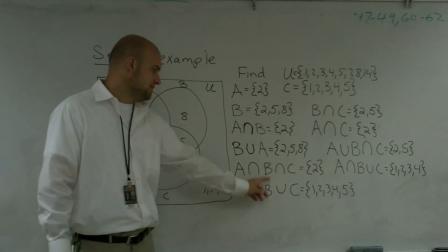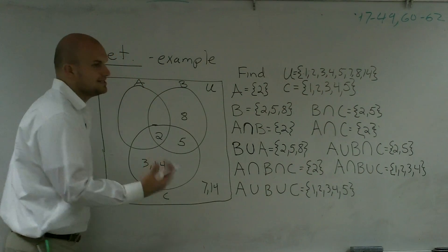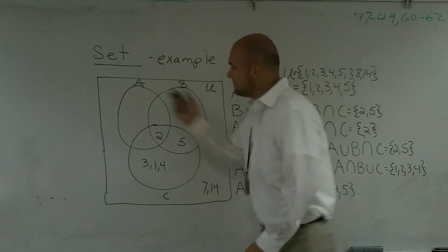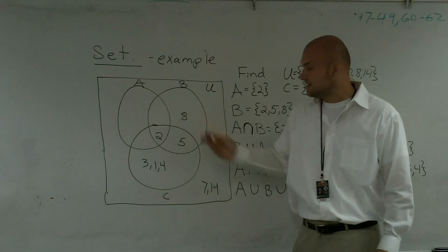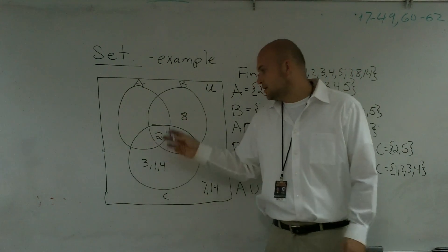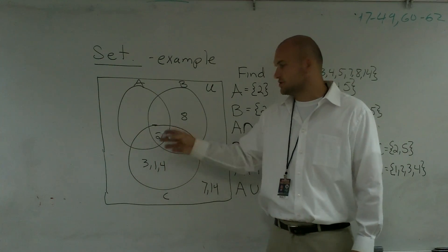Then the other one is I have A union B union C. So how we say that in words is everything that's in A, which is 2, 5, and 8, plus everything that's in C, which is 1, 3, 4, 2, and 5.